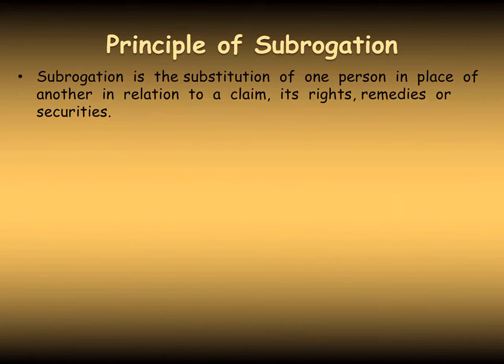So subrogation is the substitution of one person in place of another in relation to a claim, its rights, remedies, or securities. It means the insurance company will substitute itself with the policy holder because the insurance company satisfied the claim — the insurance company pays the loss to the policy holder — and after payment of loss, the same rights, the policy holder's rights, remedies and security will be transferred to the insurance company. And now the insurance company can claim the same loss from the third party.